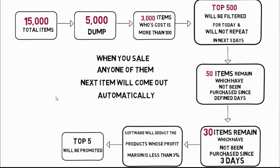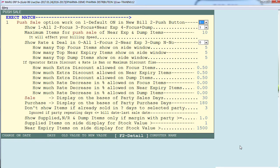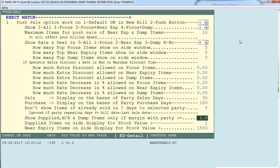The next filter is: suppose an item is dump or near expiry and the customer purchased it just 3 days back. You may not want that item displayed on the dashboard so soon. To set this condition, go to the control room and find the field 'don't show items if already sold in X days to selected party.' If you define 5 here, those items will not be displayed on the dashboard which the customer has purchased from us within the last 5 days.